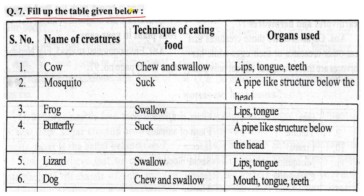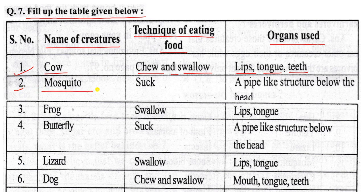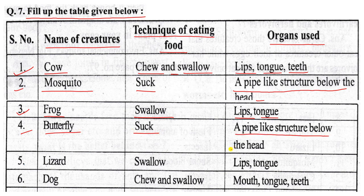Now let's fill up the table: name of creature, technique of eating food, and organs used. Number one: cow — chew and swallow — lips, tongue, and teeth. Number two: mosquito — suck — pipe-like structure below the head. Number three: frog — tongue. Number four: butterfly — pipe-like structure below the head.